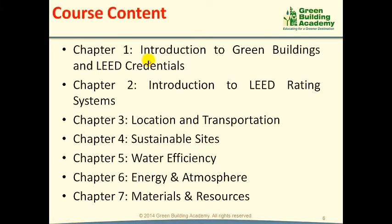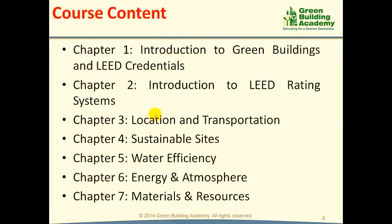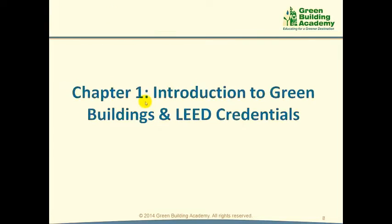The course content is divided into 12 chapters. In Chapter 1, we will discuss about green buildings and LEED credentials. In Chapter 2 and Chapter 11, we will discuss about LEED Rating Systems and US Green Building Council. From Chapter 3 to Chapter 10, we will discuss about various LEED Credit Categories. Finally, in Chapter 12, we will discuss about Cost vs Benefit of Green Buildings. Let us start with the first chapter now: Introduction to Green Buildings and LEED Credentials.